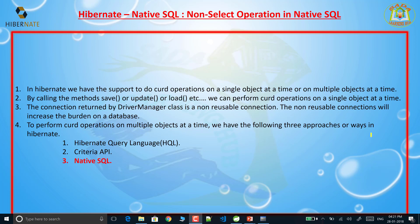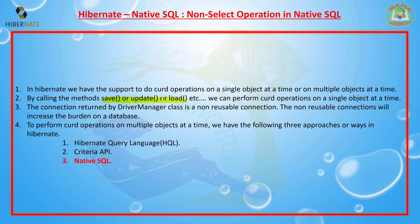In Hibernate, we support operations on a single object at a time or multiple objects at a time. For a single object we use methods like save, update, load, and get. If you want to perform operations on multiple objects, we use the Criteria API, HQL, or Native SQL. In this video I am going to discuss about Native SQL.